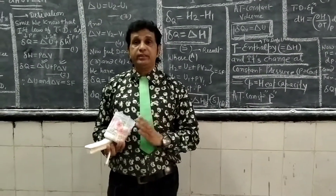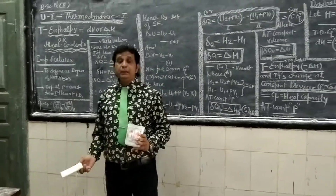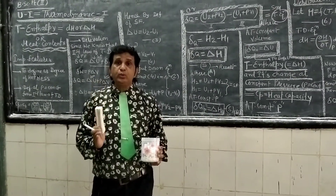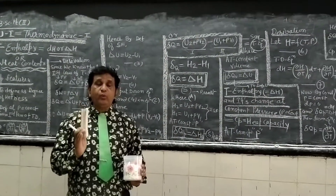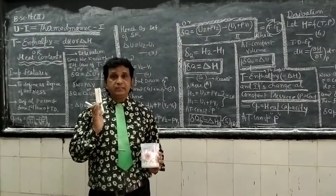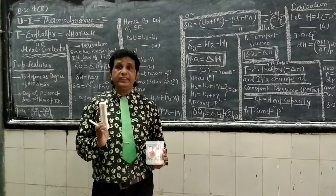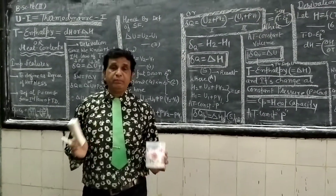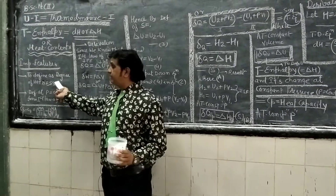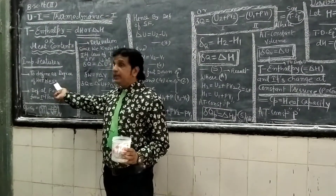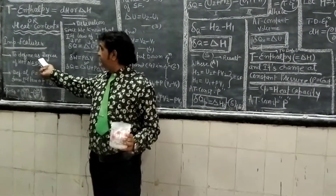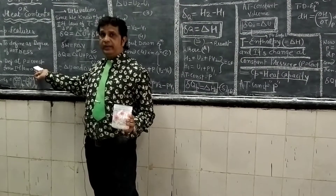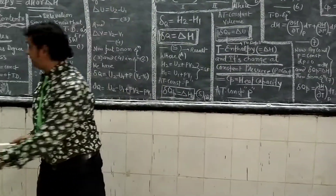In BSc Part 2, Unit 1, there are four or five important physical quantities: internal energy U, enthalpy H, Gibbs free energy G, and Helmholtz free energy A. We have discussed internal energy; today I will deliver the lecture on enthalpy. Enthalpy is defined in terms of the degree of hotness and is defined at constant pressure, while internal energy is defined at constant volume.